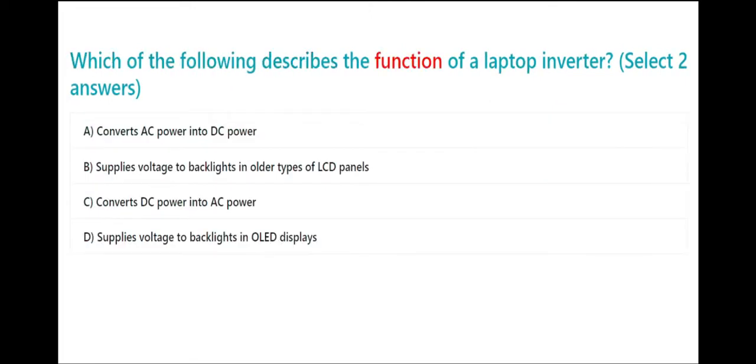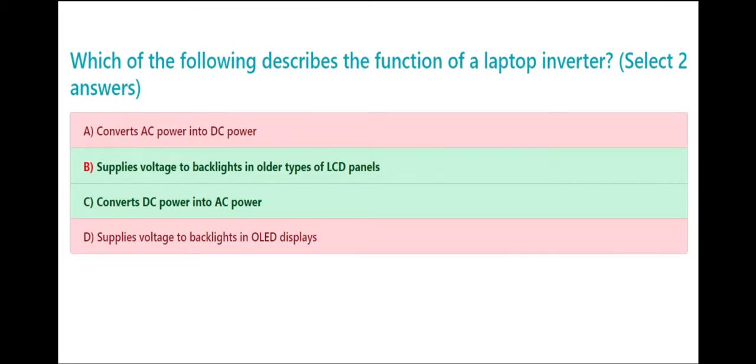Which of the following describes the function of a laptop inverter? Select two answers. A. Converts AC power into DC power. B. Supplies voltage to backlights in older types of LCD panels. C. Converts DC power into AC power. D. Supplies voltage to backlights in OLED displays. The correct answers are B. Supplies voltage to backlights in older types of LCD panels, and C. Converts DC power into AC power.